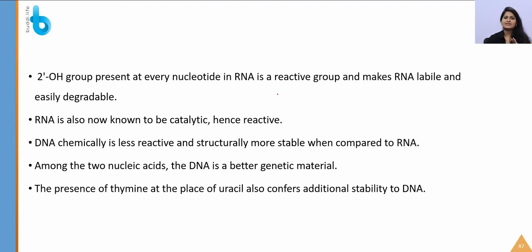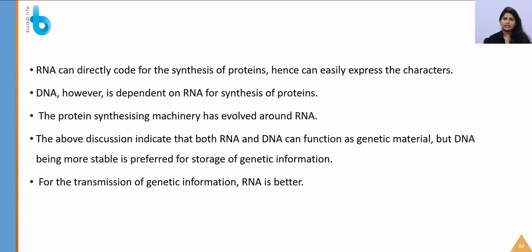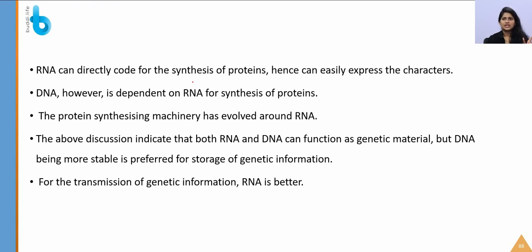RNA was the first genetic material — before DNA evolved. RNA is also used as a catalyst (ribozyme) in some important biochemical reactions. However, RNA being highly reactive and unstable, DNA evolved from RNA with chemical modifications making it more stable. DNA, being double-stranded with a complementary strand, also evolved a process of repair, making it the preferred genetic material.